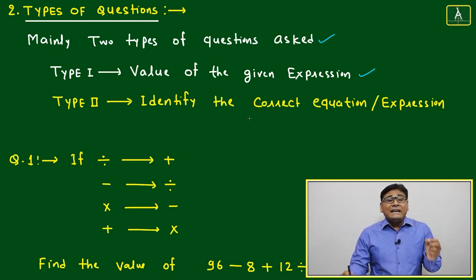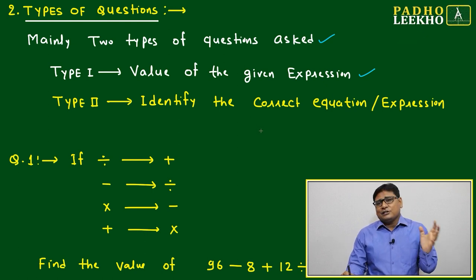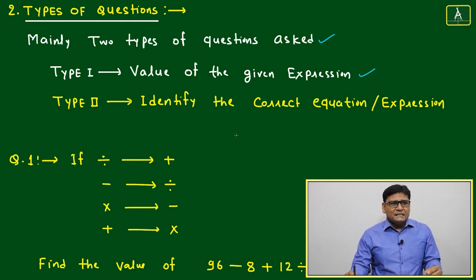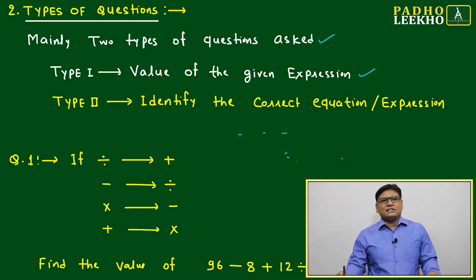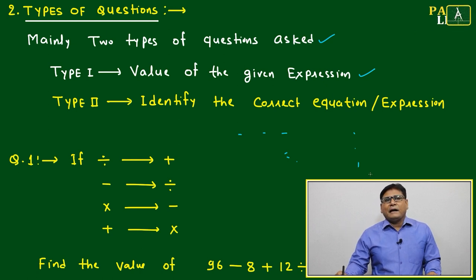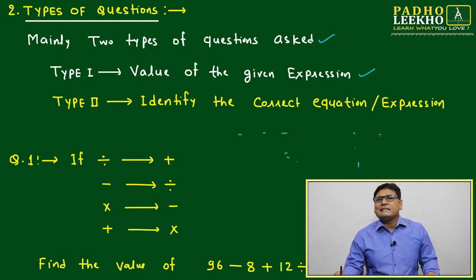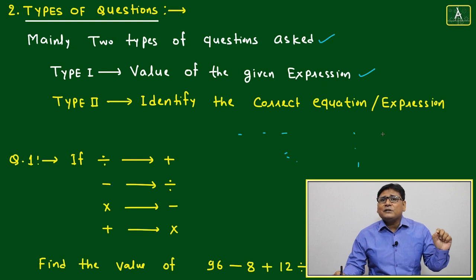Type II is to identify the correct equation or expression. Based on instructions, two, three, four, or five statements, equations, or expressions are given, and you have to find which one is correct.